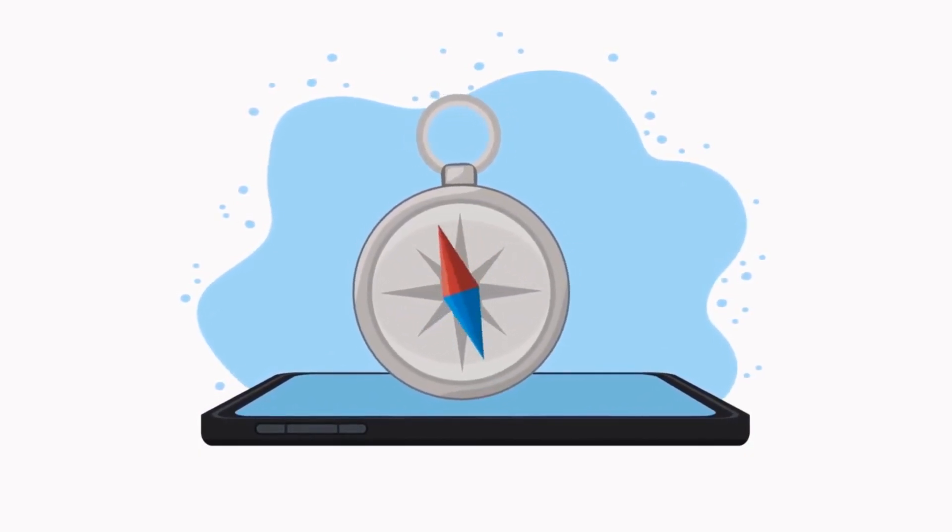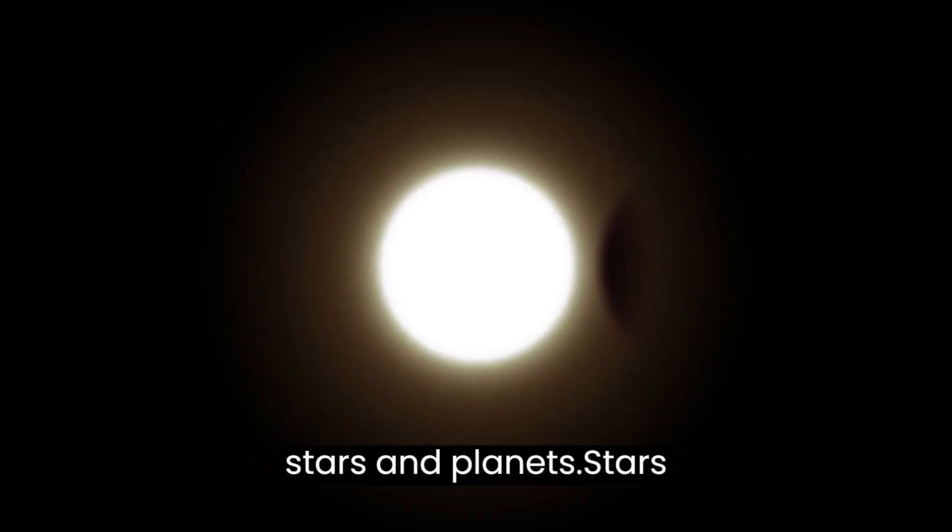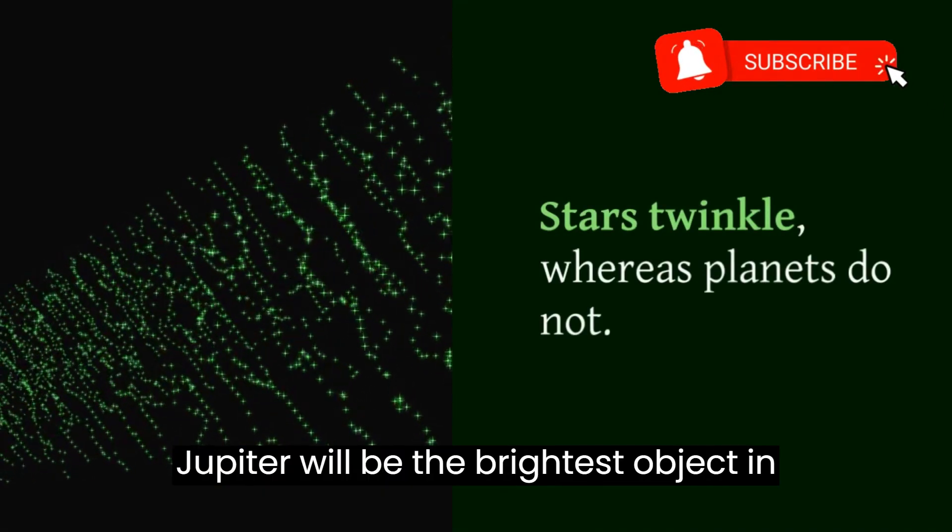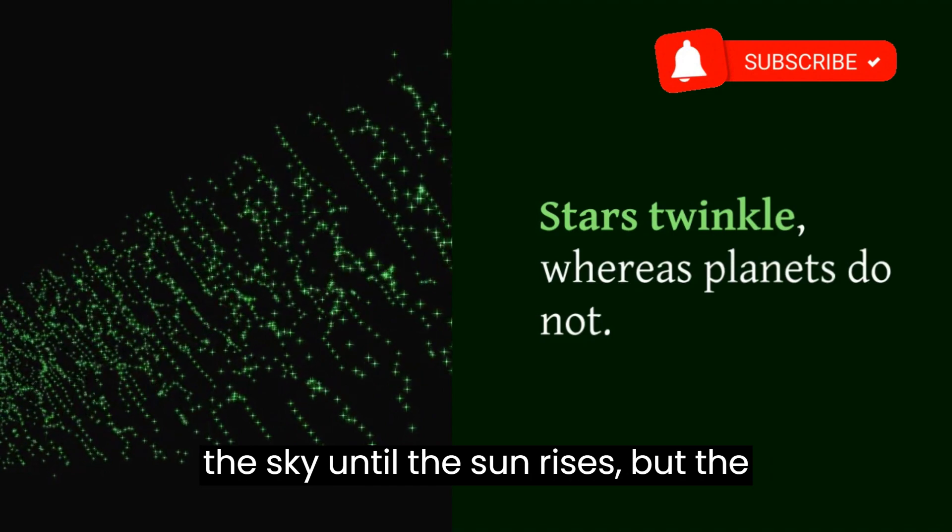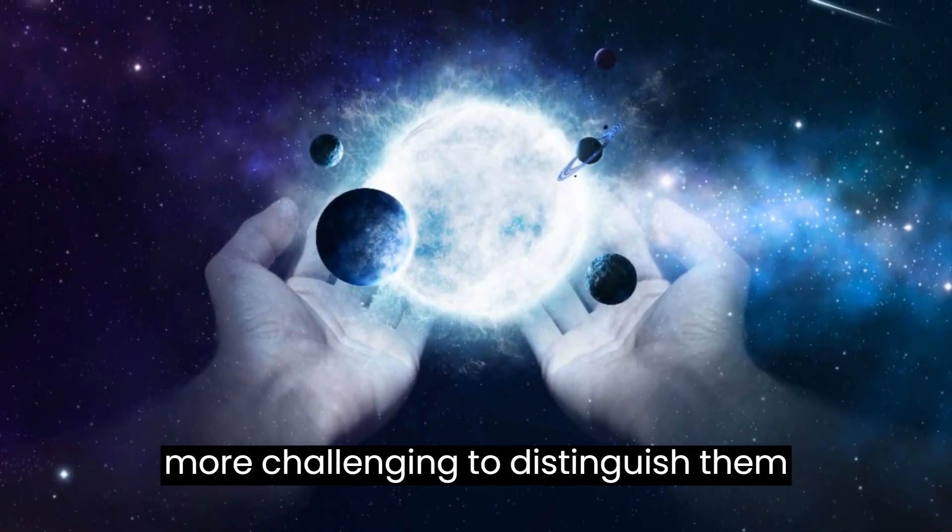When observing the skies, it's essential to differentiate between stars and planets. Stars twinkle, whereas planets do not. Jupiter will be the brightest object in the sky until the sun rises, but the other planets will be fainter, making it more challenging to distinguish them from stars.